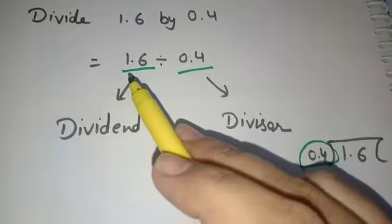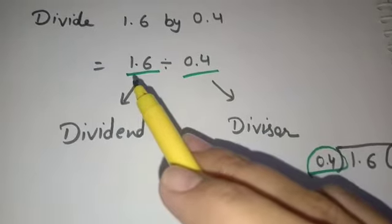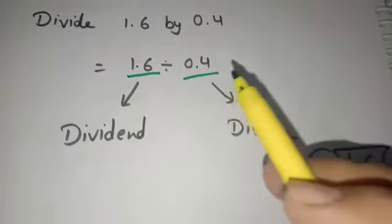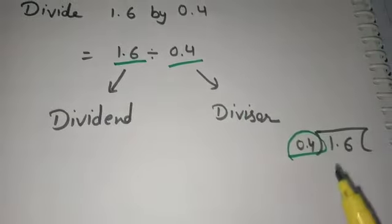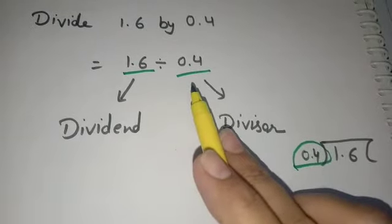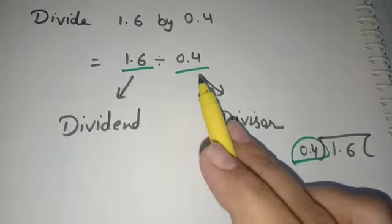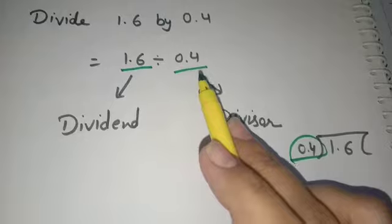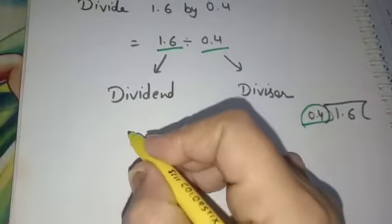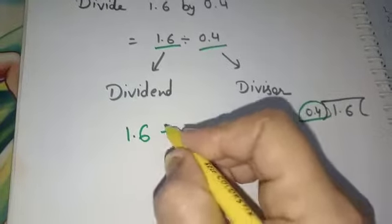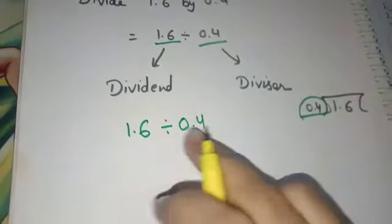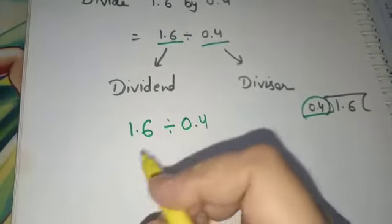Whatever the dividend is, whether whole or decimal, if the divisor is a whole number then we will use the long division method. If divisor is a decimal number then we will use the method of fractions. How can we divide such kind of questions? Let's see 1.6 divides 0.4. These decimals will be converted to fractions.